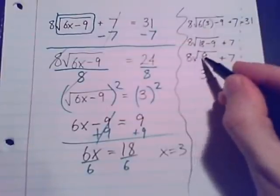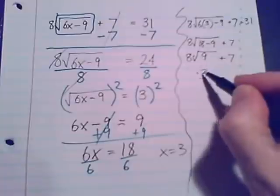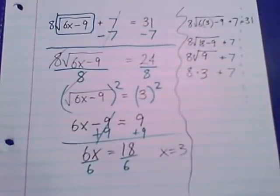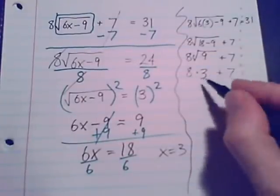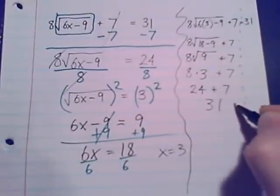And remember that this 8 out front, that's a multiplication. So when we see square root of 9 is 3, that 8 is still going to be multiplied. And it's going to be multiplied, definitely, before we think about this add 7. There's 24 plus 7. It does equal 31.